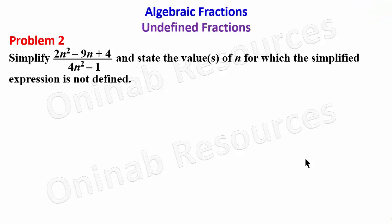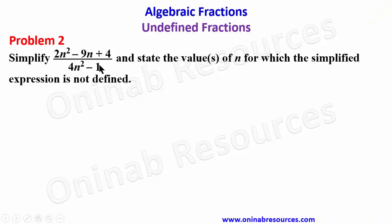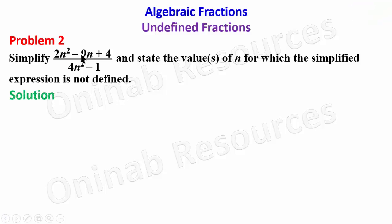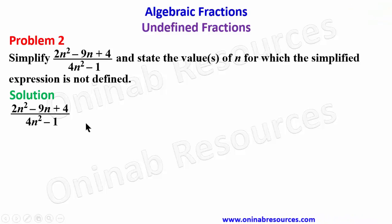We move to problem two: simplify (2n² − 9n + 8) over (4n² − 1), and state the value or values of n for which the simplified expression is not defined. In our solution we will factorize the numerator and denominator, cancel common factors to get the simplified form, then use that to find where it is undefined.